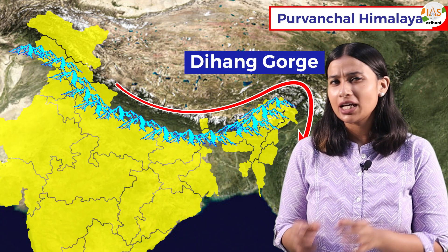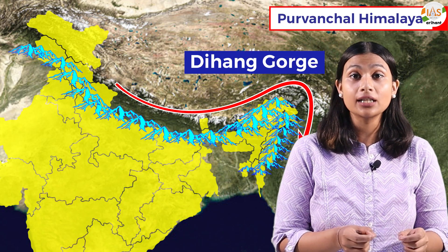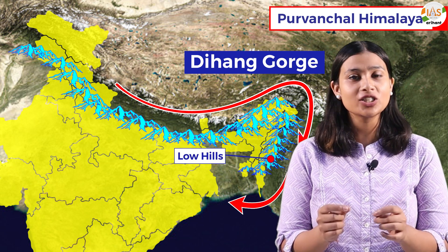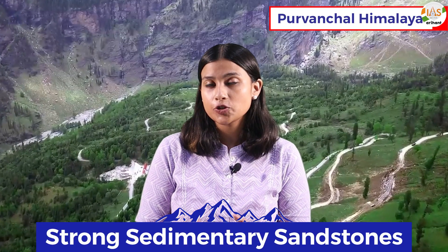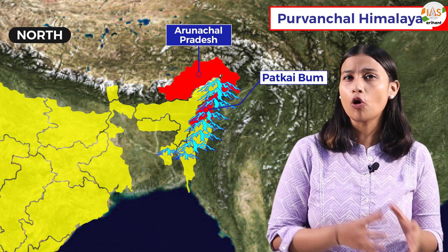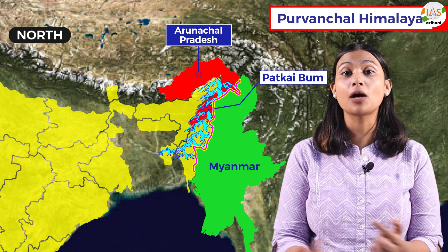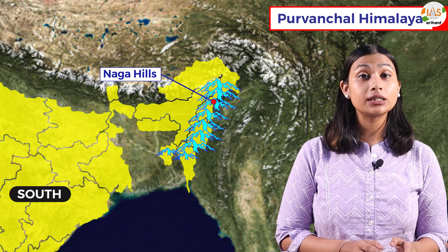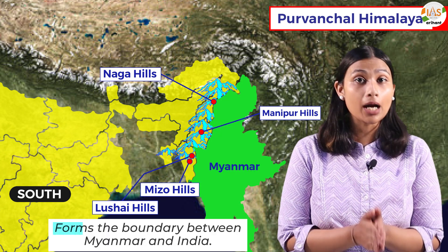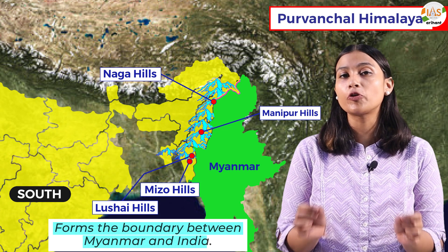Longitudinal series ke sabse last me aata hai Purwanchal. After crossing Dihang Gorge, Himalayas achanak se southern turn lete hai, aur comparatively low hills form karti hai, jo west ki taraf jaate hai — jise hum Purwanchal ke naam se jante hai. Ye ranges mostly strong sedimentary sandstone se form hue hai, aur ghane jungle se covered rehti hai. Agar its extension dhekho, to ye north me Patkai Bum se Arunachal Pradesh aur Myanmar ke beech international boundaries create karte hai, aur south me Naga Hills, Manipur Hills, Mizo Hills aur Lushai Hills ko aapas me merge karke Myanmar aur India ke beech boundary form karte hai.